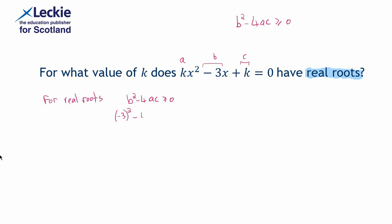4 lots of a means 4 lots of k multiplied by another k. So a was k and c was k, so we've got a couple of k's multiplying together there. All of that greater than or equal to 0. And as I said, negative 3 squared is 9, and negative 4 multiplied by k multiplied by k gives us negative 4k squared here.